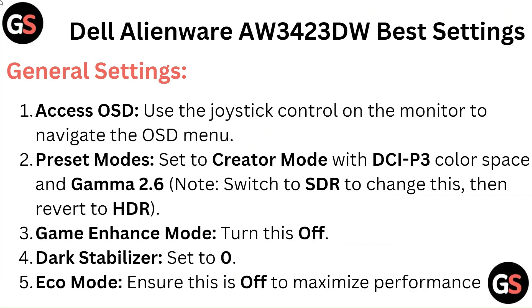General Settings: Access the OSD using the joystick control on the monitor to navigate the OSD menu. For Preset Modes, set to Creator Mode with DCI-P3 Color Space and Gamma 2.6. Switch to HDR to change this, then revert to HDR.